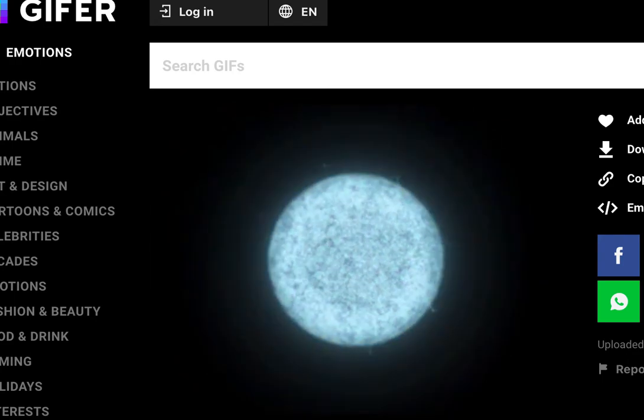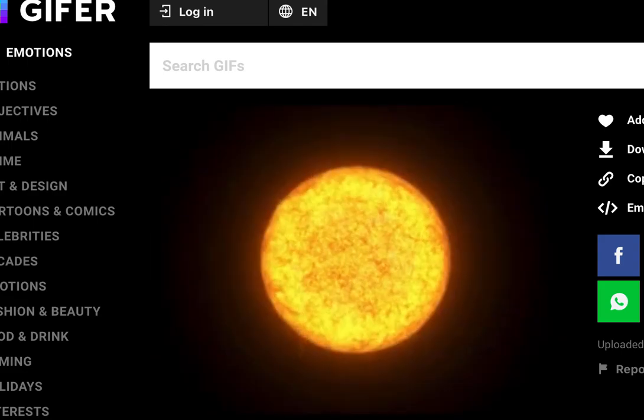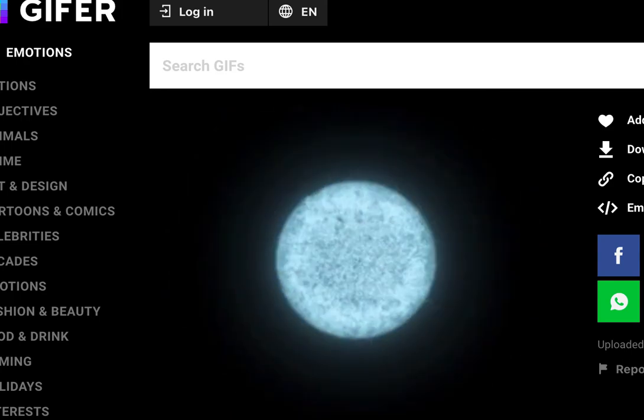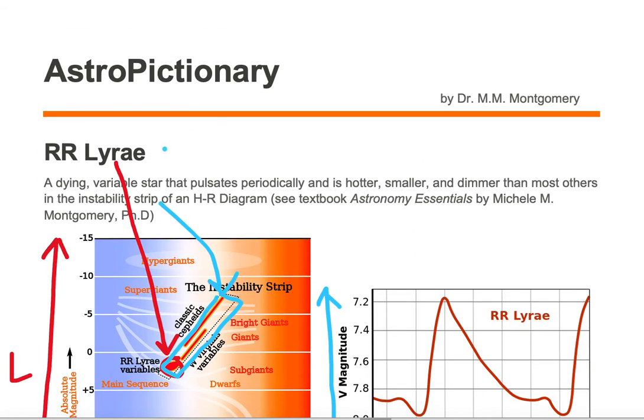Now this is an animation of an RR Lyra, and so it's going faster than an RR Lyra might typically pulsate. But you get the idea. An RR Lyra is a dying variable star that pulsates periodically.